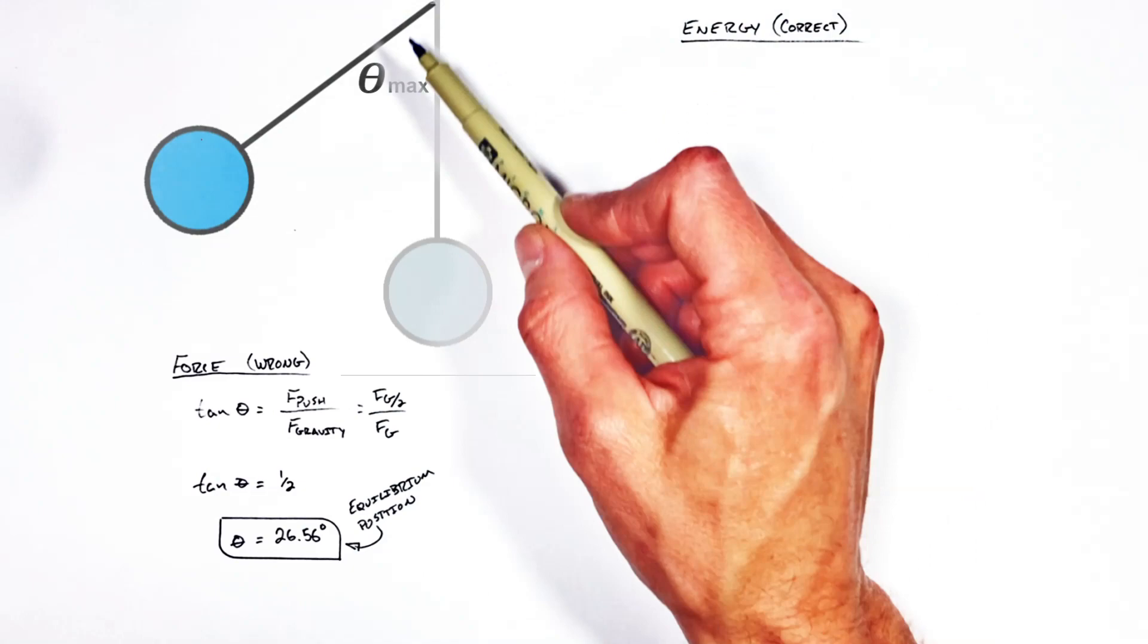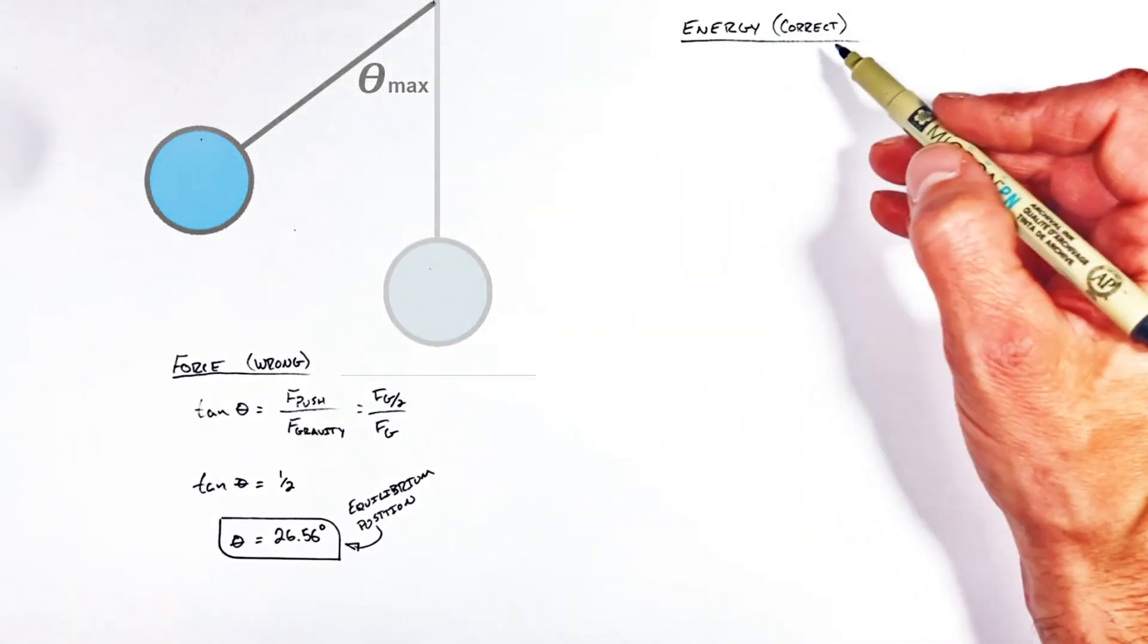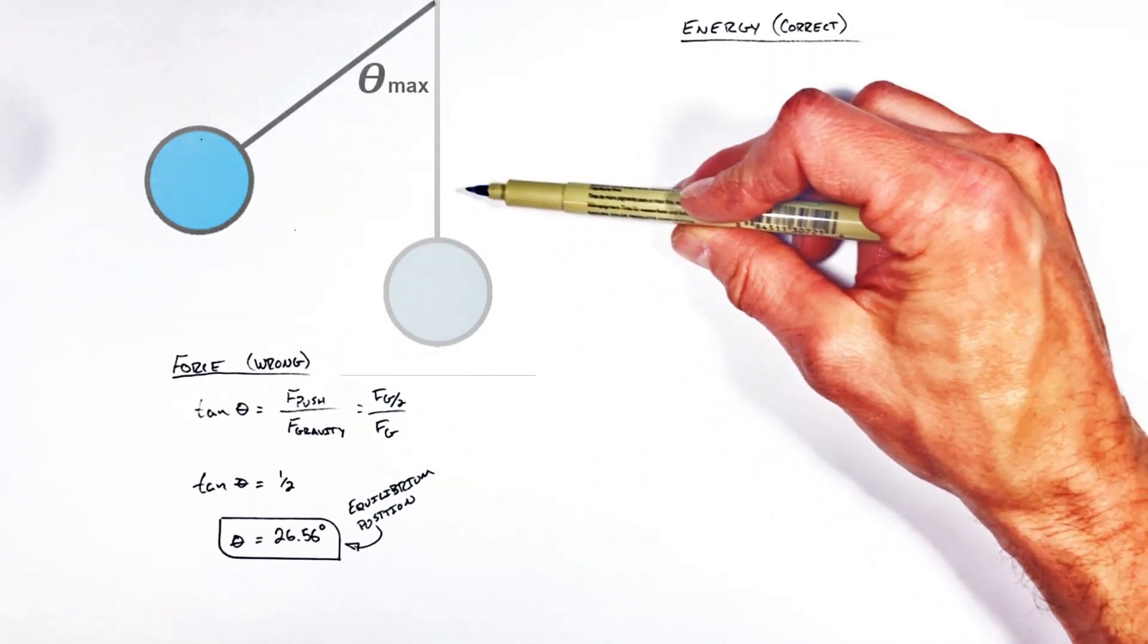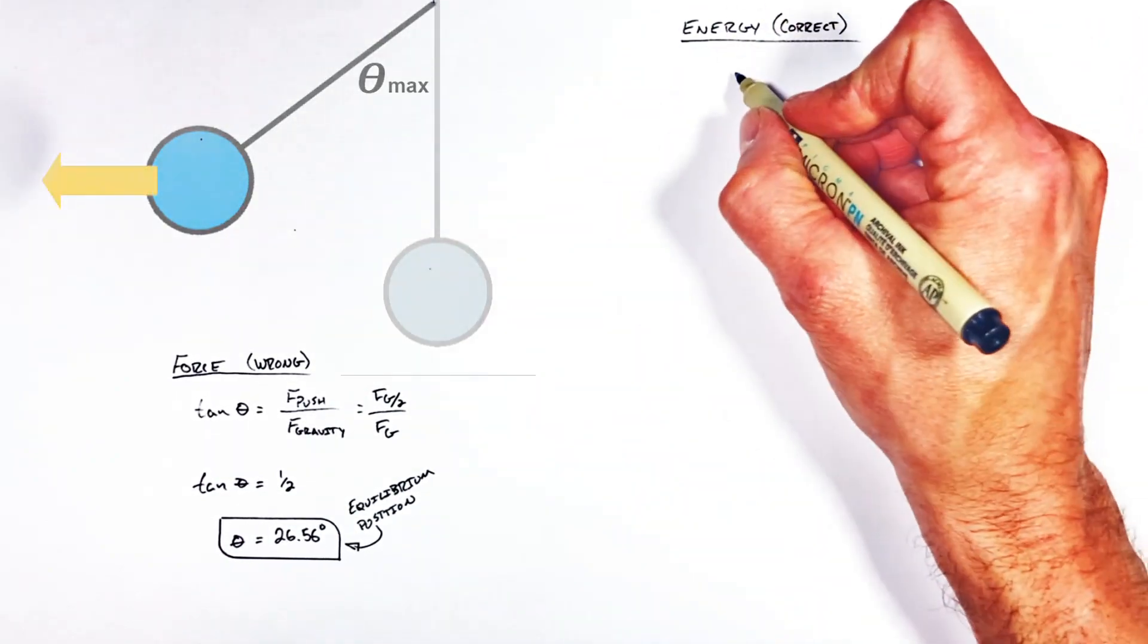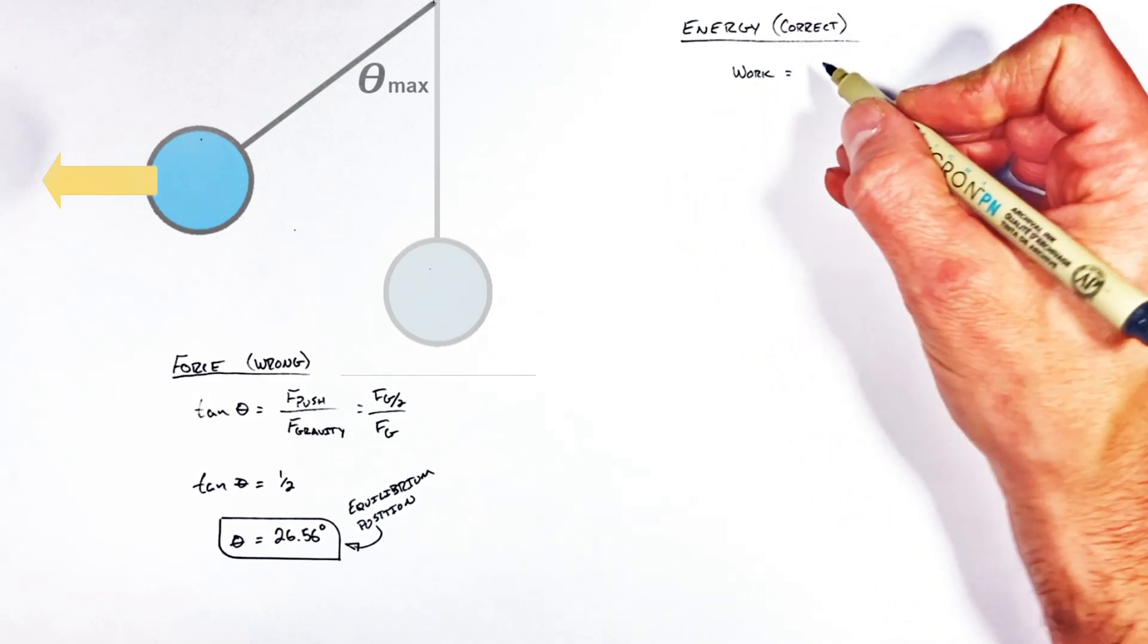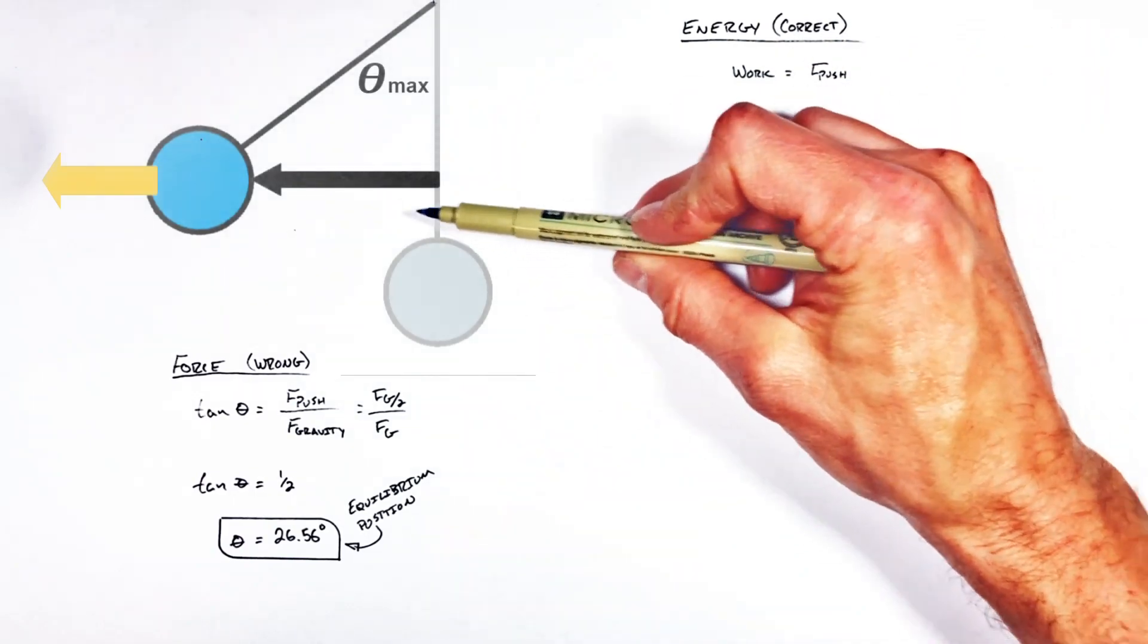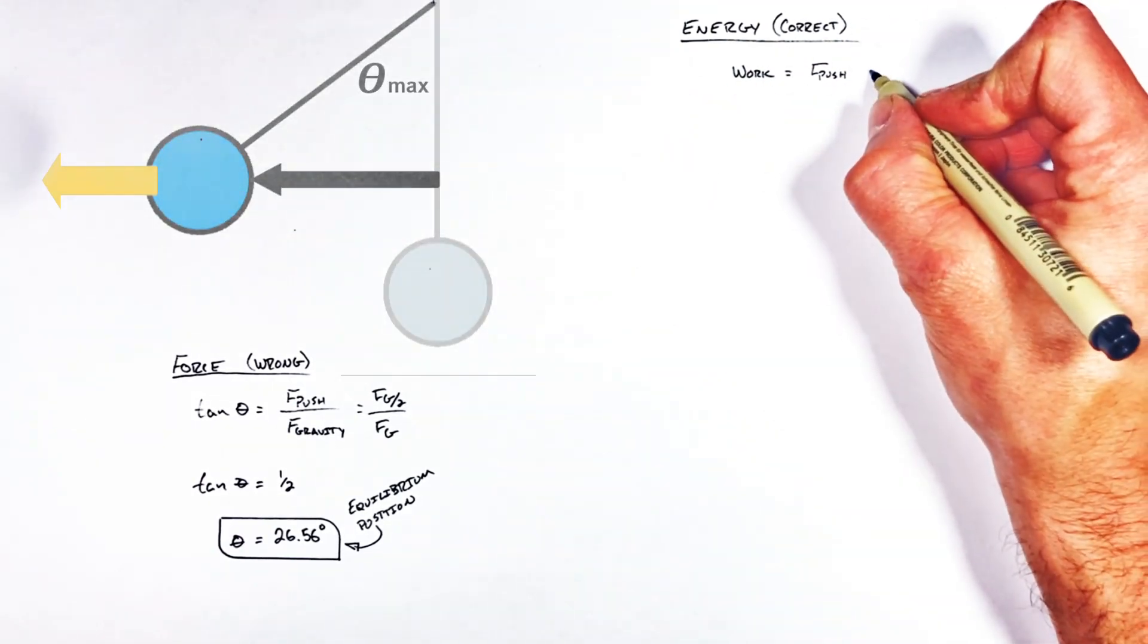So in order to solve for the maximum displacement of this pendulum, we need to turn to energy. You see, as the pendulum is pushed to the side, there's going to be some work done on the pendulum. That's going to be equal to the push force multiplied by however far horizontally we push this pendulum. I'm going to call that some distance d.